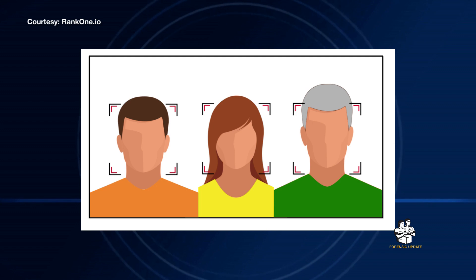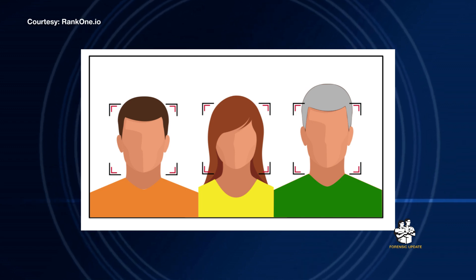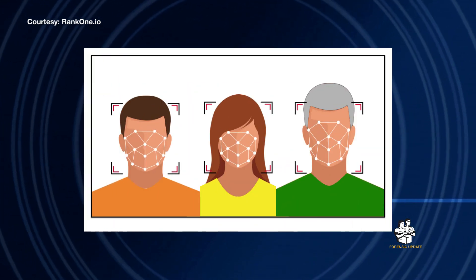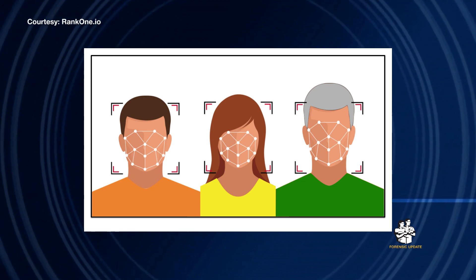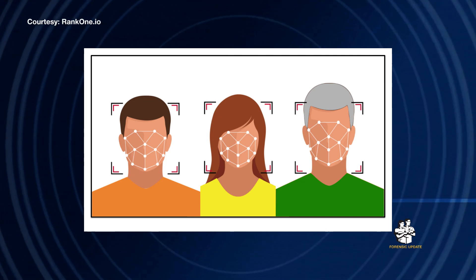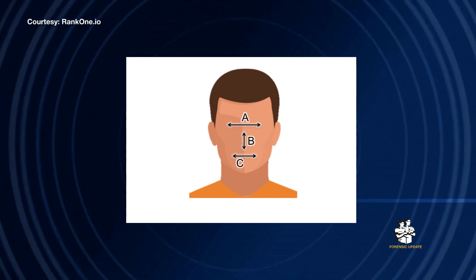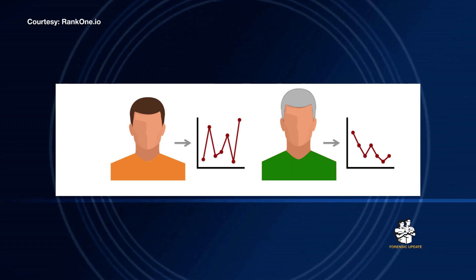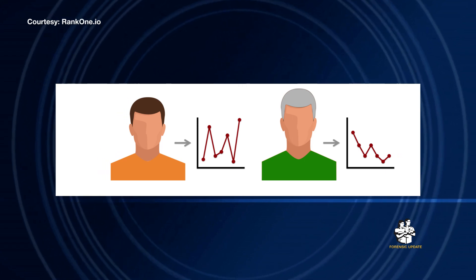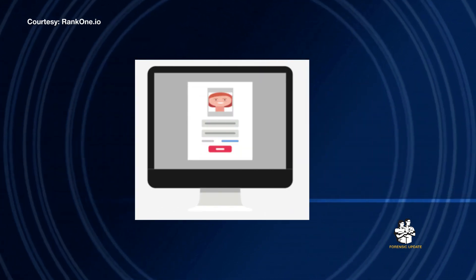Facial recognition is really a two-step process where the first step, the algorithm will take an image or a video frame and it's going to detect every face that exists within those images. Then for each detected face, it's going to create a representation, often called a template, that encodes the facial characteristics of a given face. The other portion of automated face recognition is comparing the two templates, where the algorithm receives two templates and outputs a measure of similarity between the two. It also can be used for searching a database.